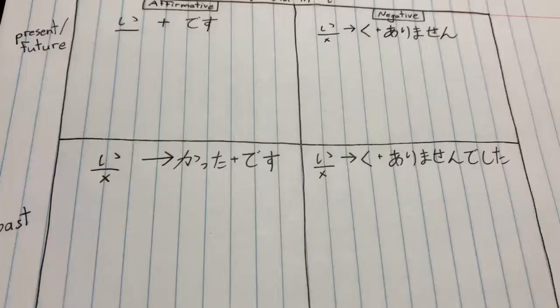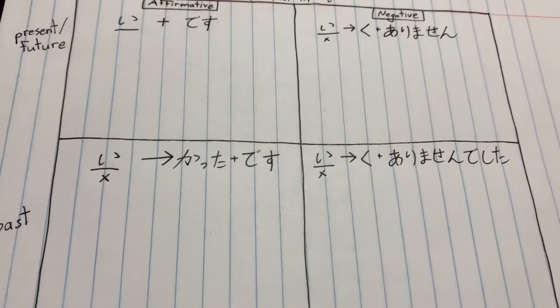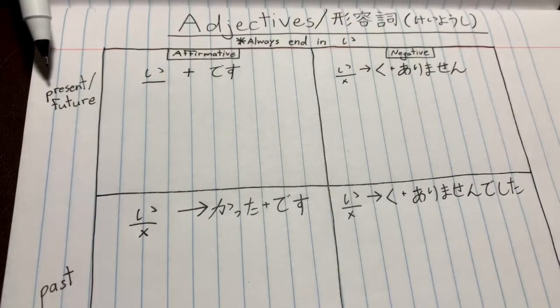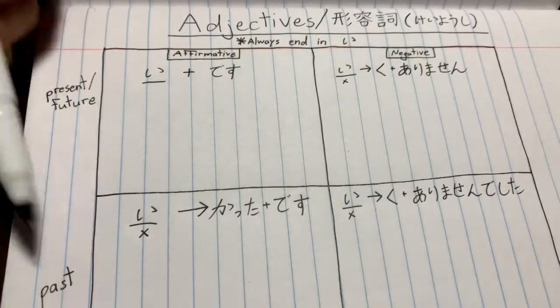Let's jump into my notebook so you can see what I'm talking about and learn how to conjugate these adjectives. So we are here again in my notebook and we have our matrix: affirmative, negative, present/future and past.